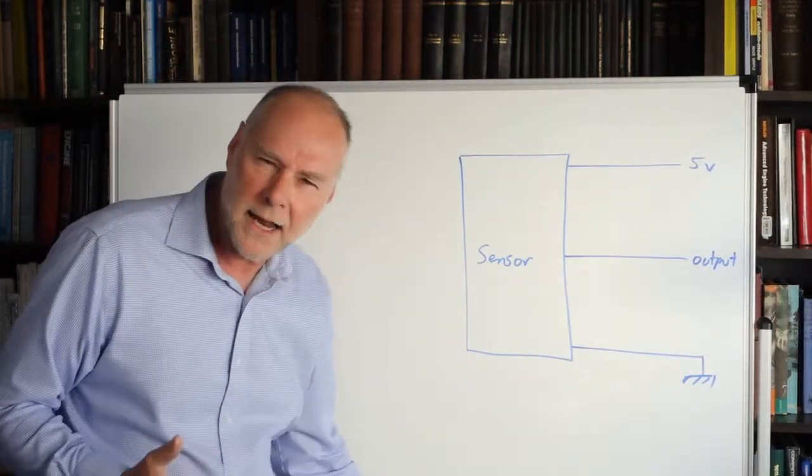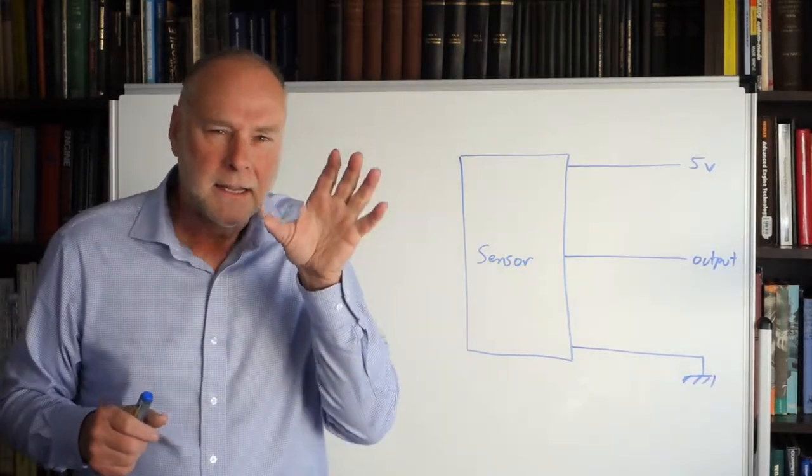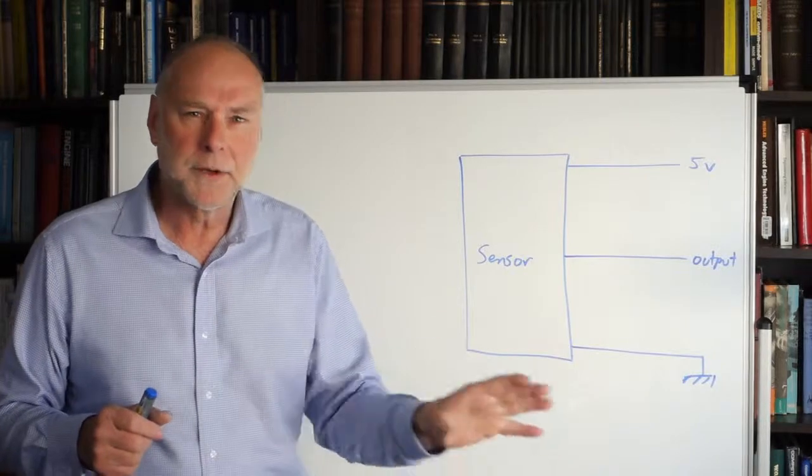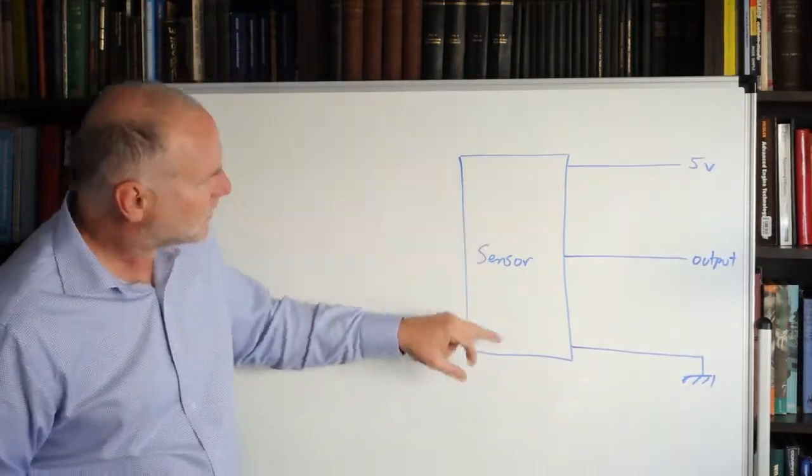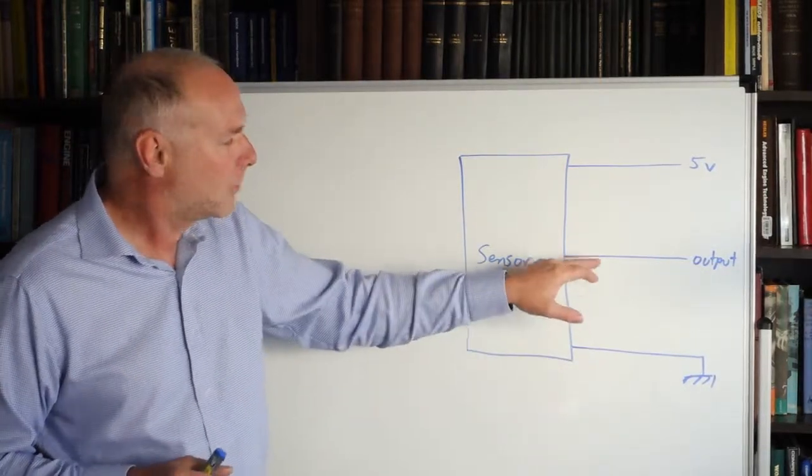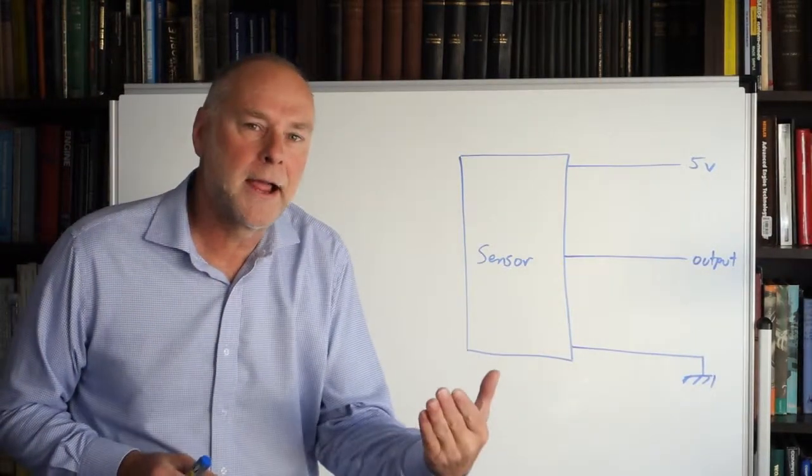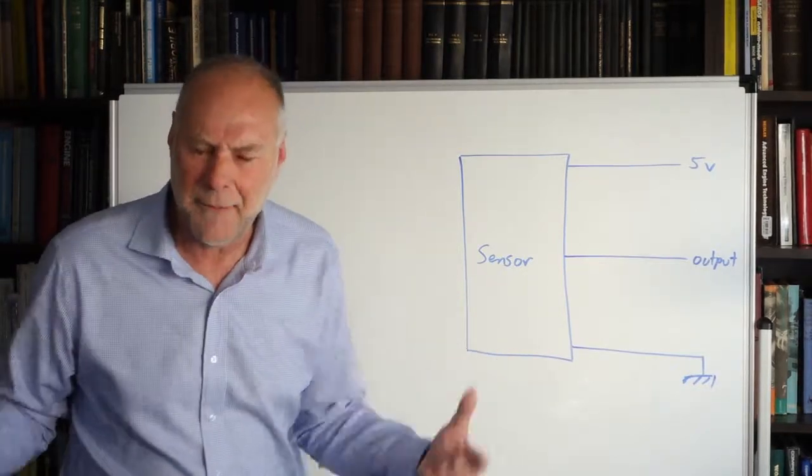So why is today's video different? Well, some sensors are acting in a different way to what we saw previously. In this type of sensor, we have, as we did before, a 5-volt supply, an output and a ground, but that output stays around 2.5 volts unless something is happening.